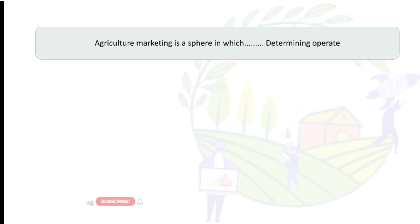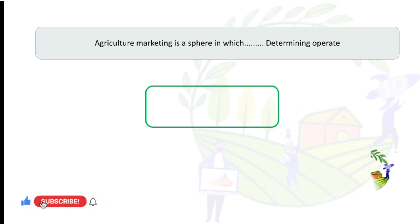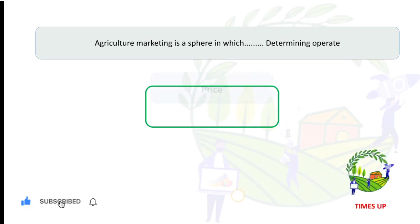Agricultural marketing is a sphere in which price-determining operations operate. So the answer is price-determining operations.